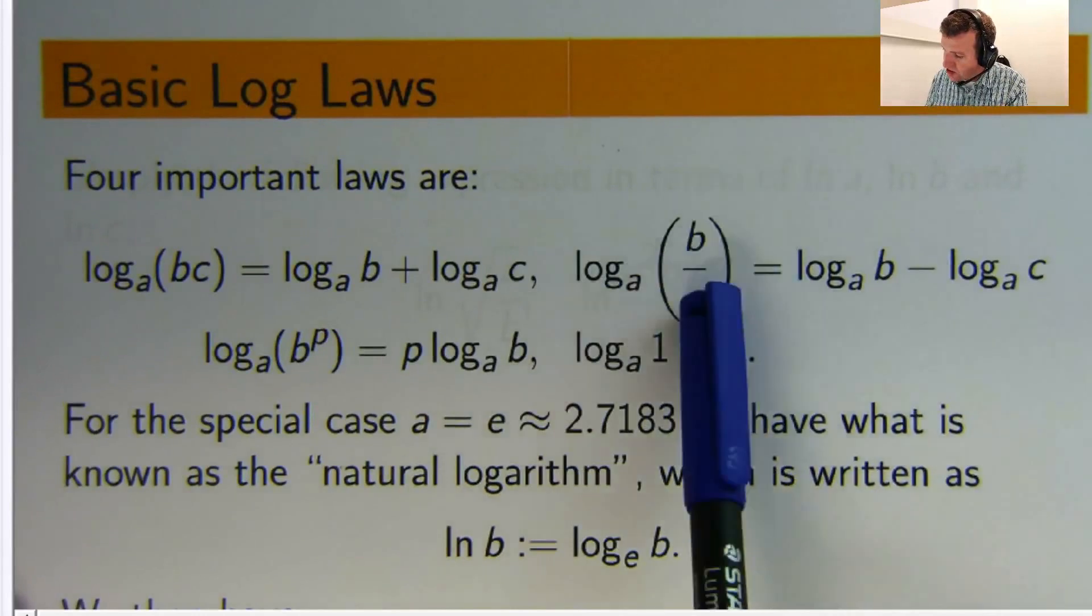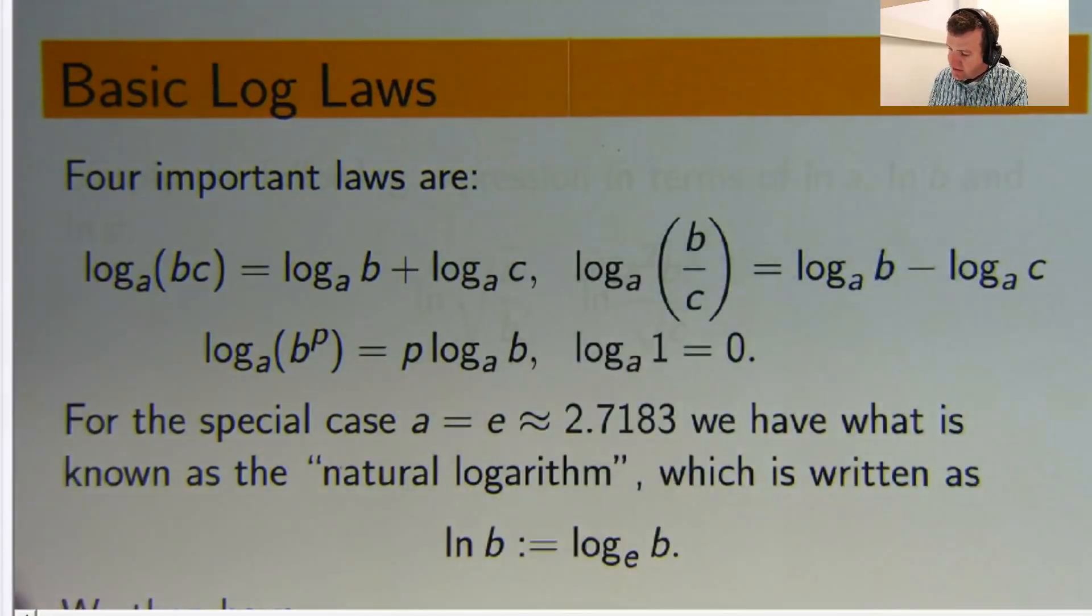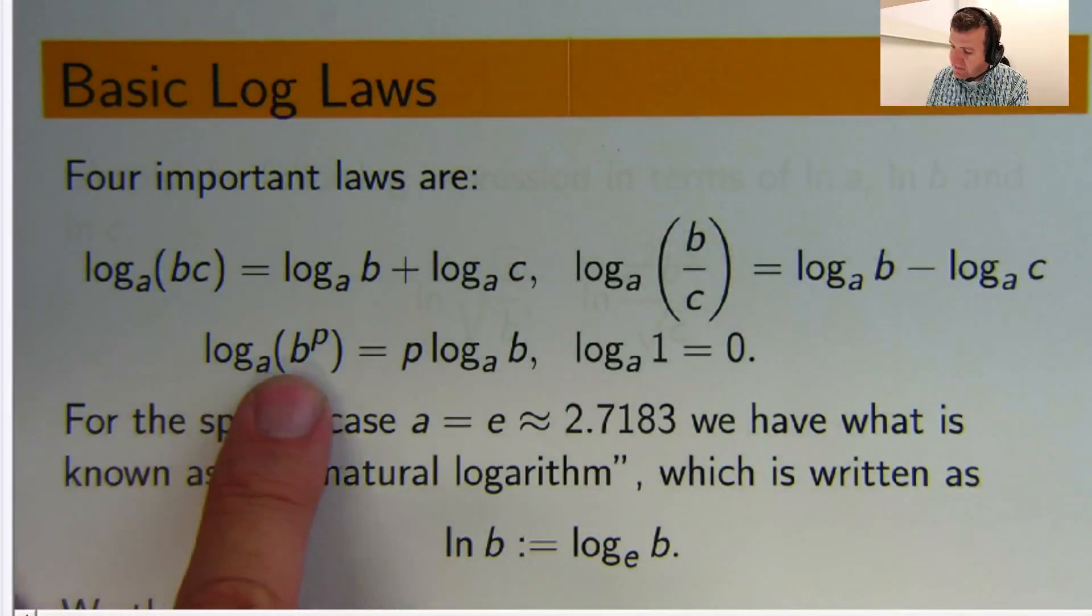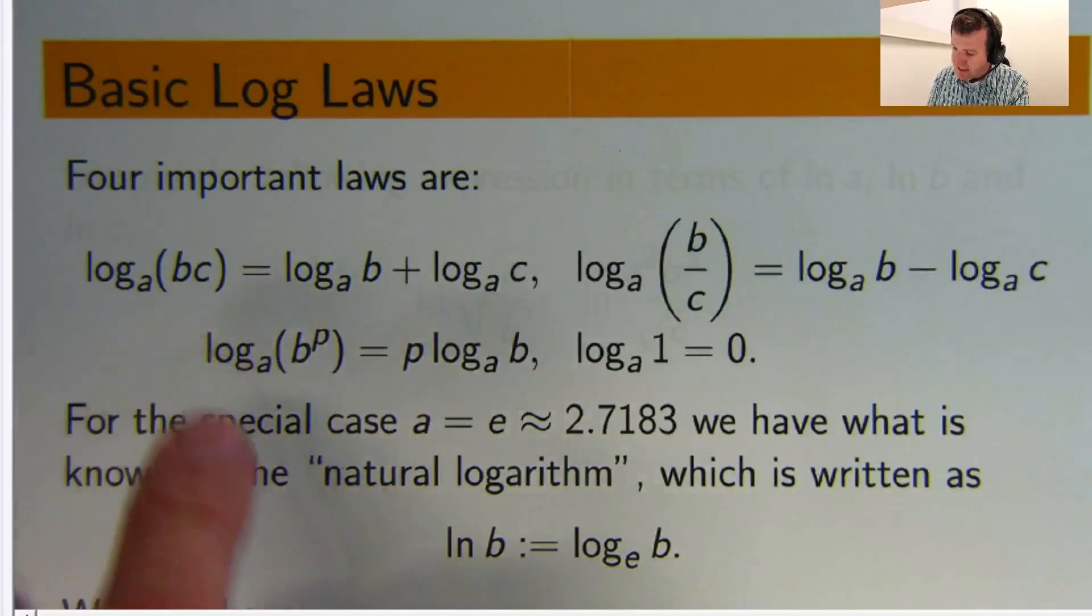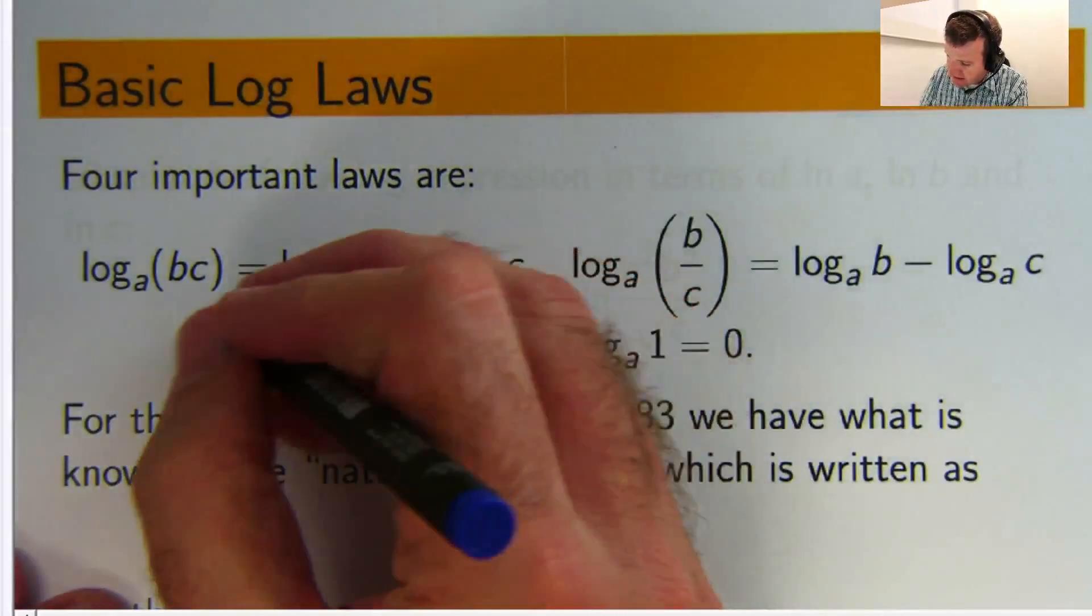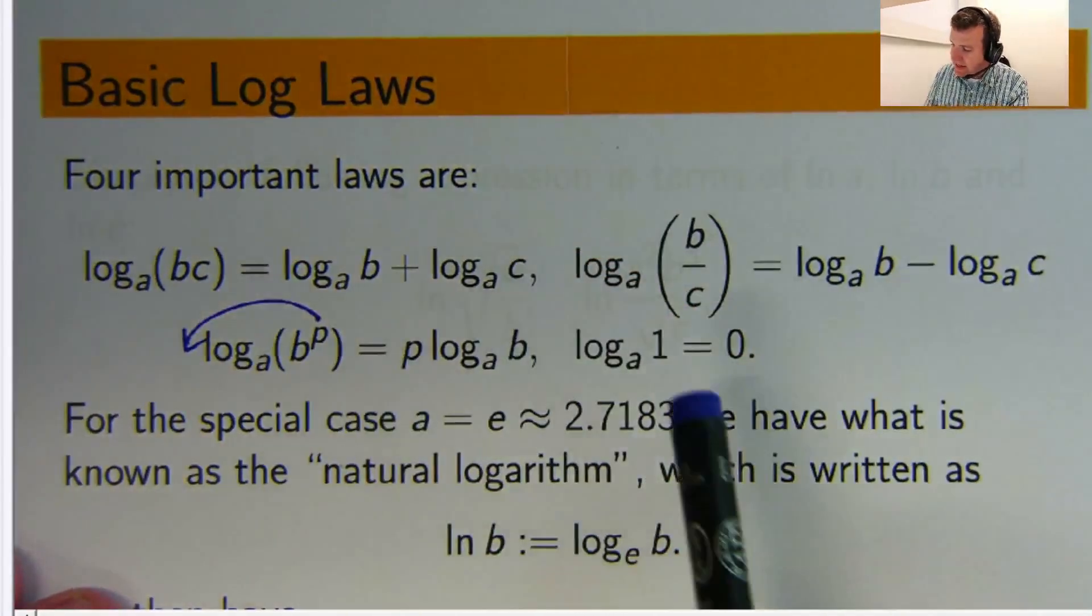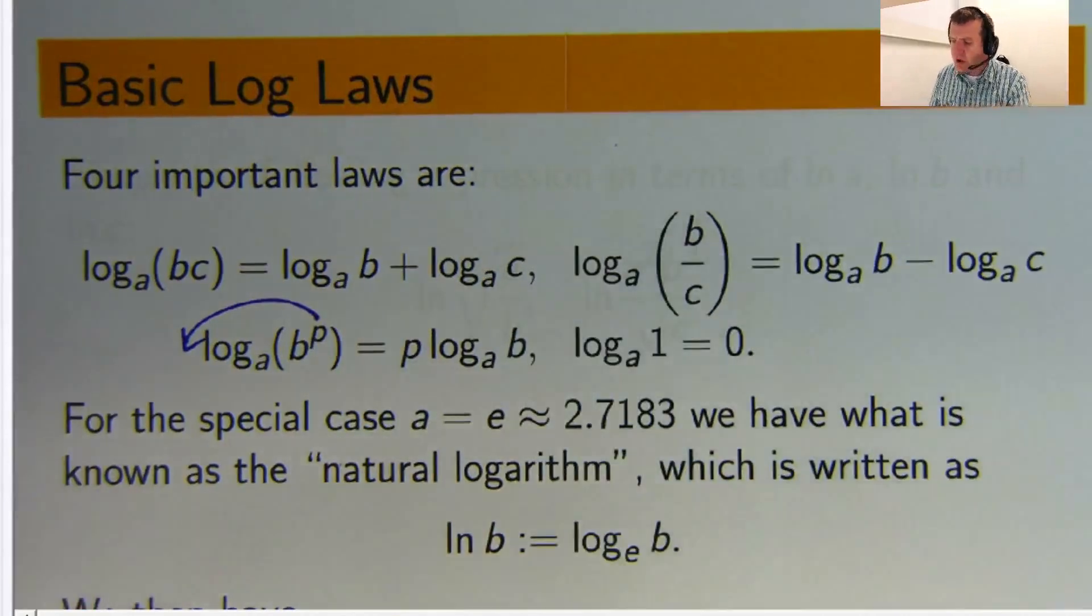The second is a quotient to difference rule. So, you've got a quotient here. You can change it to a difference. The third one is a power rule. So, you've got b to the power p. You can bring the p to the front. And, the log of 1 to any base is 0.